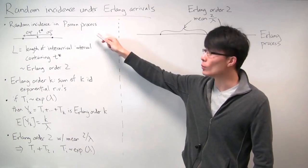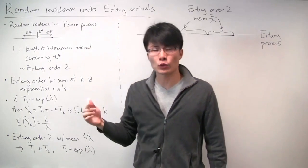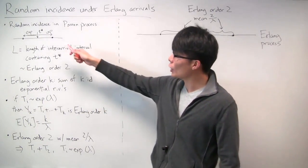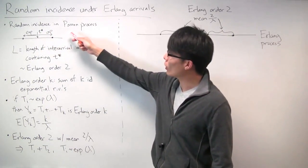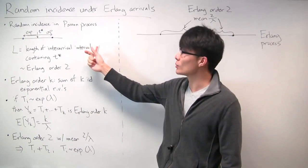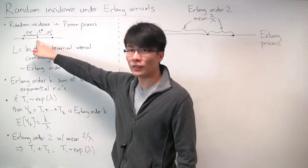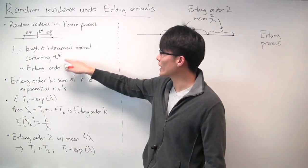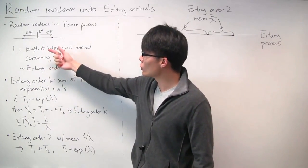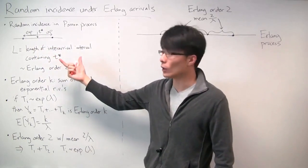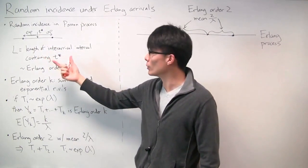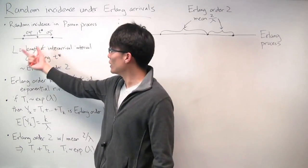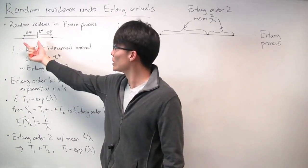In a Poisson process, the times between arrivals, or the inter-arrival time, is distributed as an exponential random variable. Random incidence for a Poisson process refers to the somewhat surprising result that when you consider a specific time t*, the length of the inter-arrival interval containing t* is not distributed as a simple exponential random variable — it's actually distributed as an Erlang random variable of order 2, or equivalently a sum of two exponential random variables.